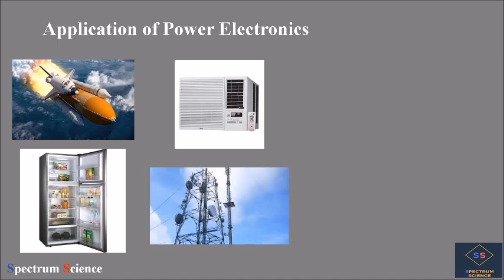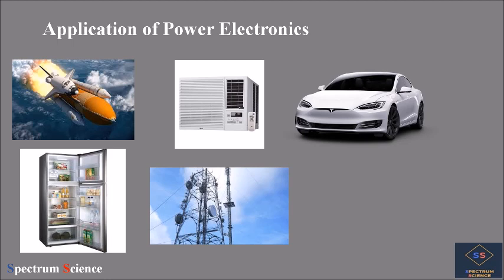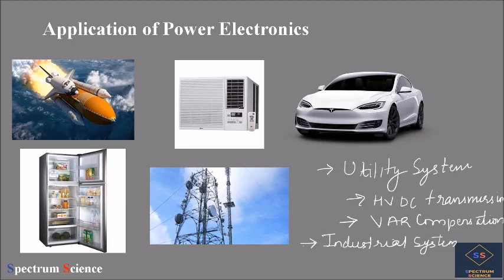Power electronics is also used in transmission systems, battery systems, and power supplies. The best use is in electric vehicles, where energy from the battery is converted into a suitable form through a power electronics converter before being supplied to the motors. Other applications include utility systems like HVDC transmission, and industrial systems such as steel arc furnaces, where high current is passed through an electrified electrode to melt iron.